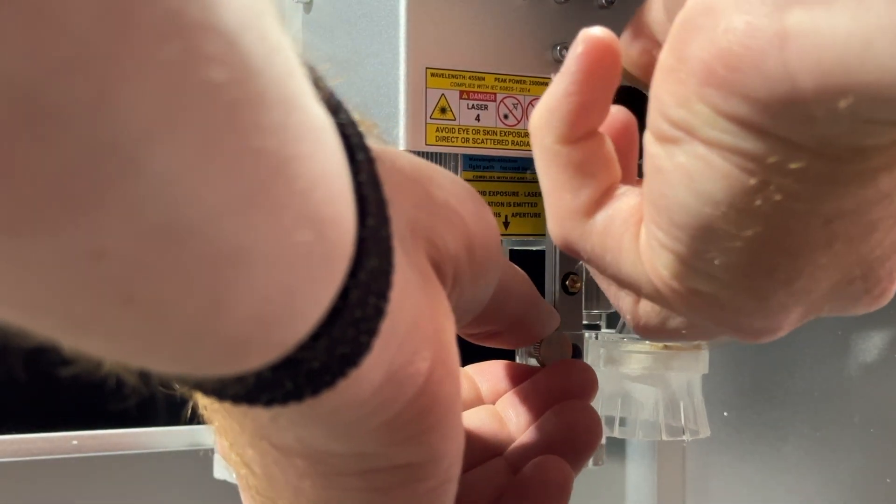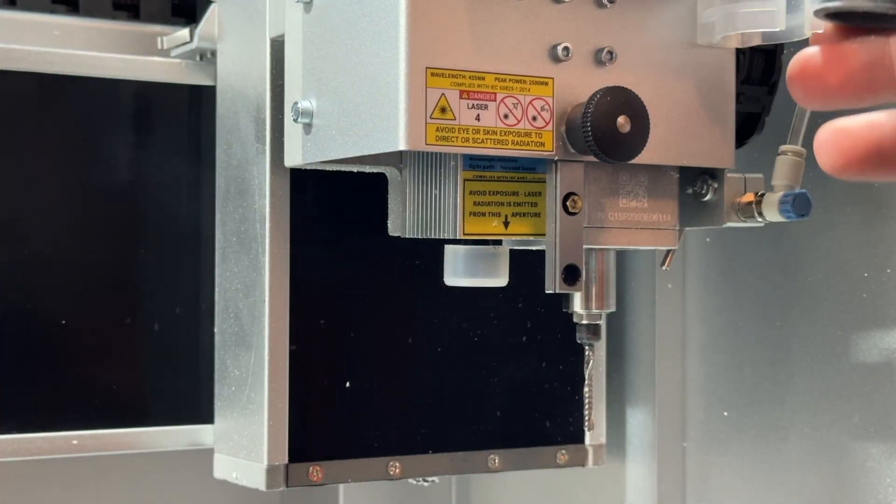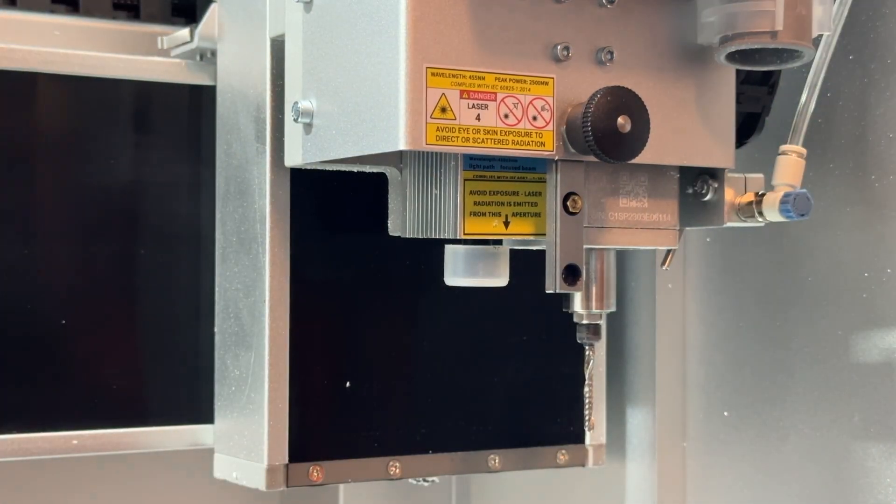First, raise and lock the dust shoe bracket to the highest position, then remove the dust shoe entirely. You can then secure the dust collection hose in place by using the clip on the tool head.